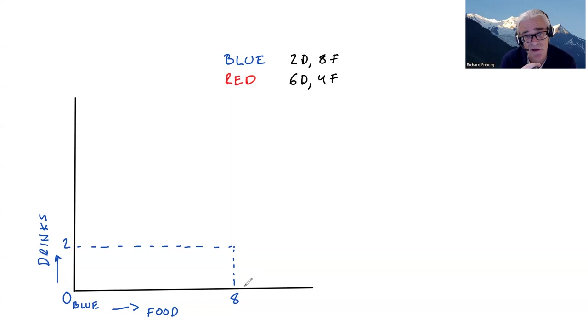We do have a tool for saying if someone is better or worse off or the same, and this is of course indifference curves. So let's draw an indifference curve for Blue that is passing through our initial endowment. And as usual with indifference curves, points further from the origin are associated with higher utility. Okay, so that's one person.